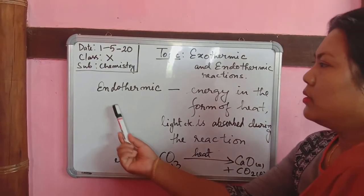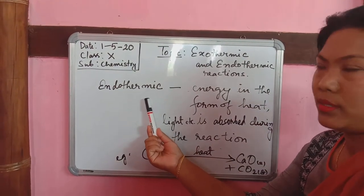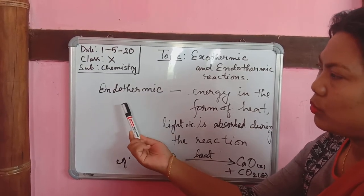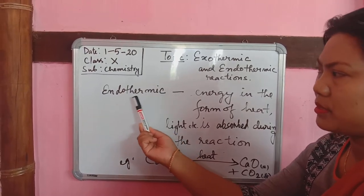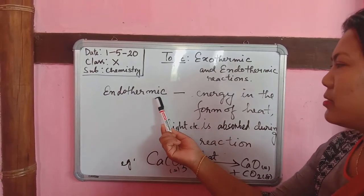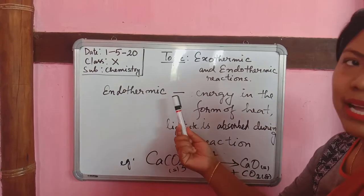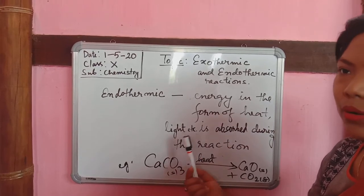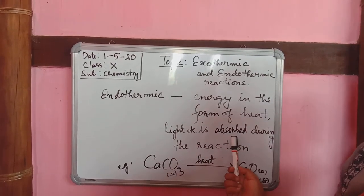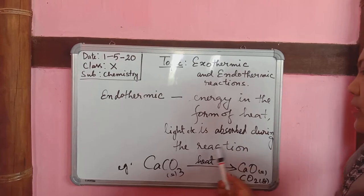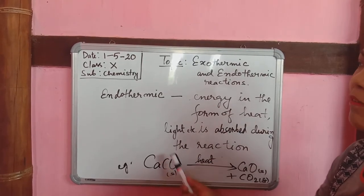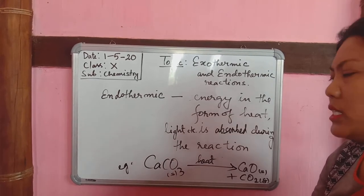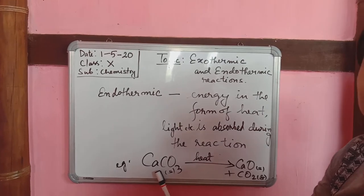Now, endothermic reactions. 'Endo' means absorb, and 'thermic' generally represents heat. In an endothermic reaction, energy in the form of heat, light, or any form is absorbed during the reaction. That type of reaction we call an endothermic reaction. A simple example comes from decomposition reactions.